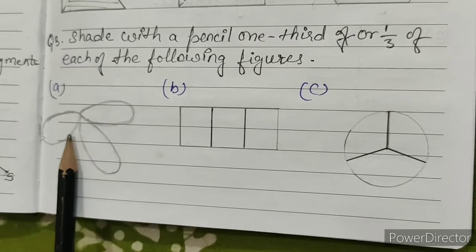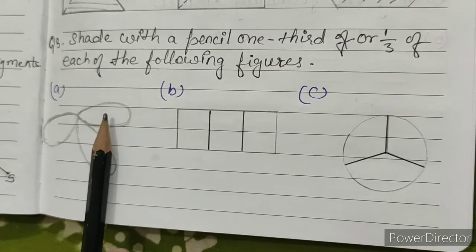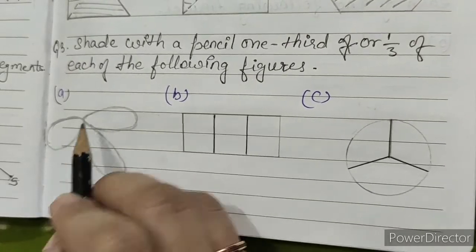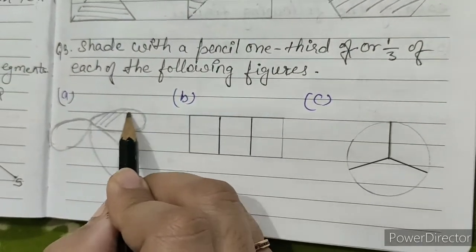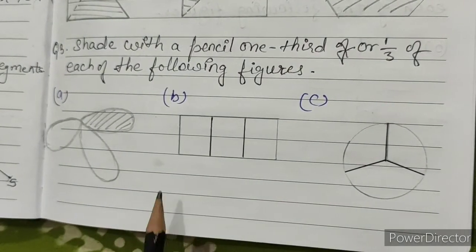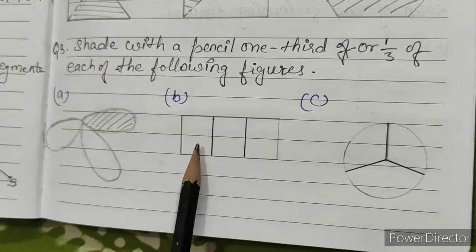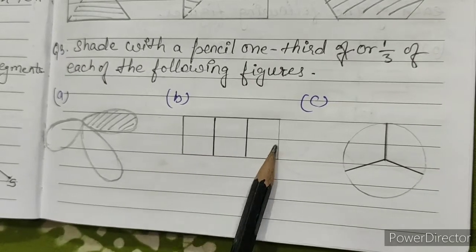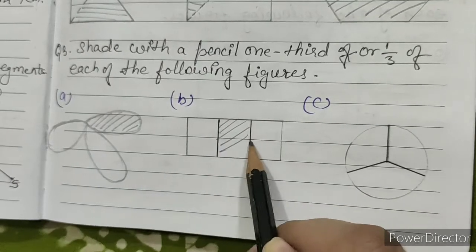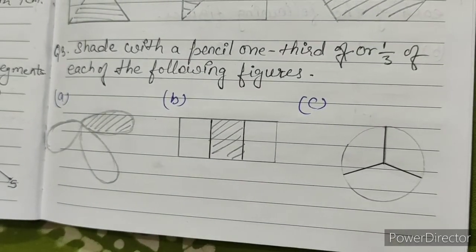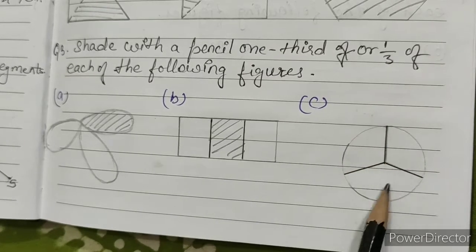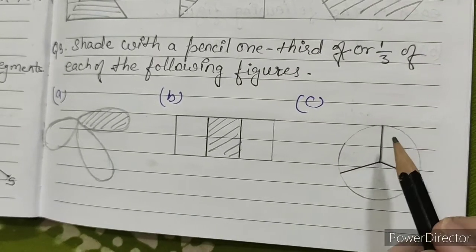This figure is divided into three equal parts — 1, 2, 3. We have to shade any one part. B: this figure is also divided into three equal parts — 1, 2, 3; we have to shade any one part. C: this figure is also divided into three equal parts; we have to shade any one part.